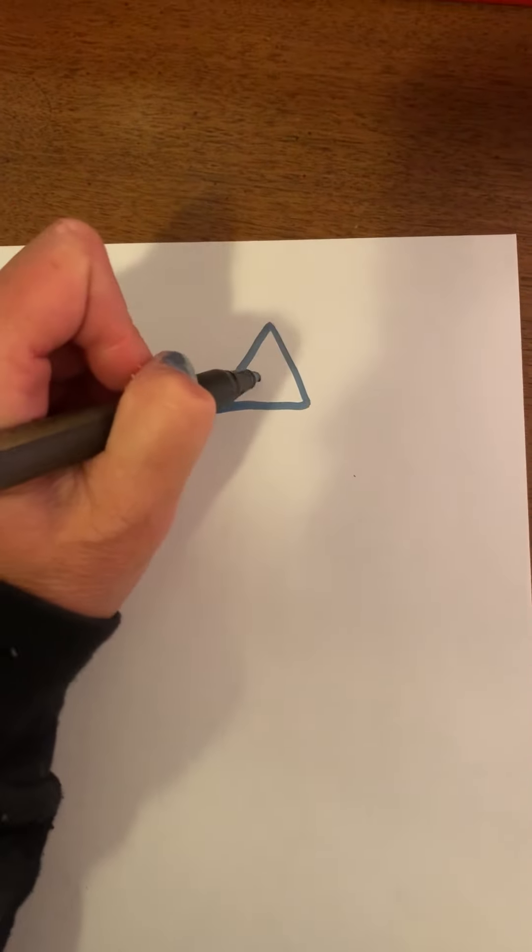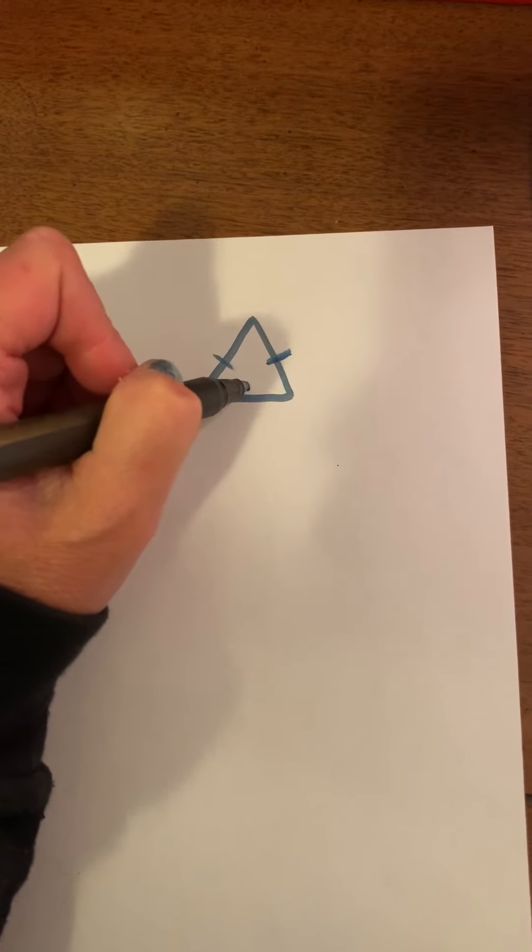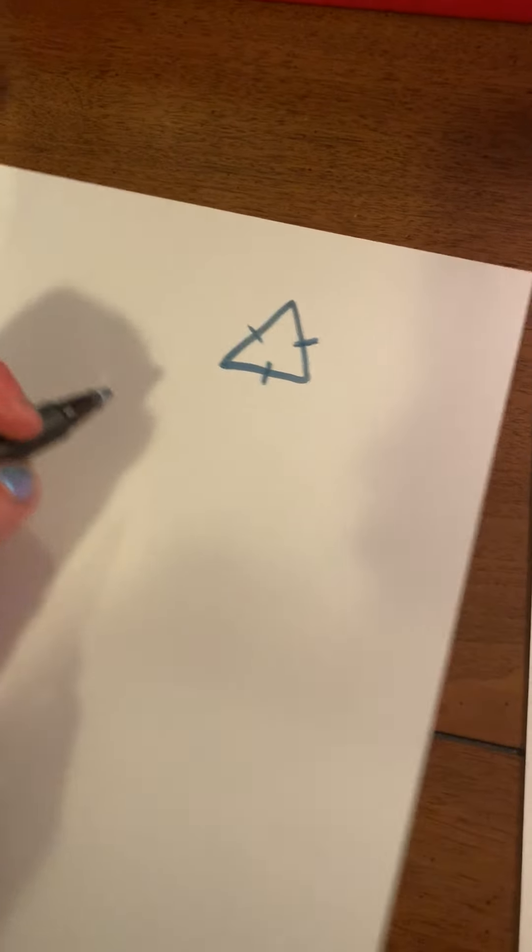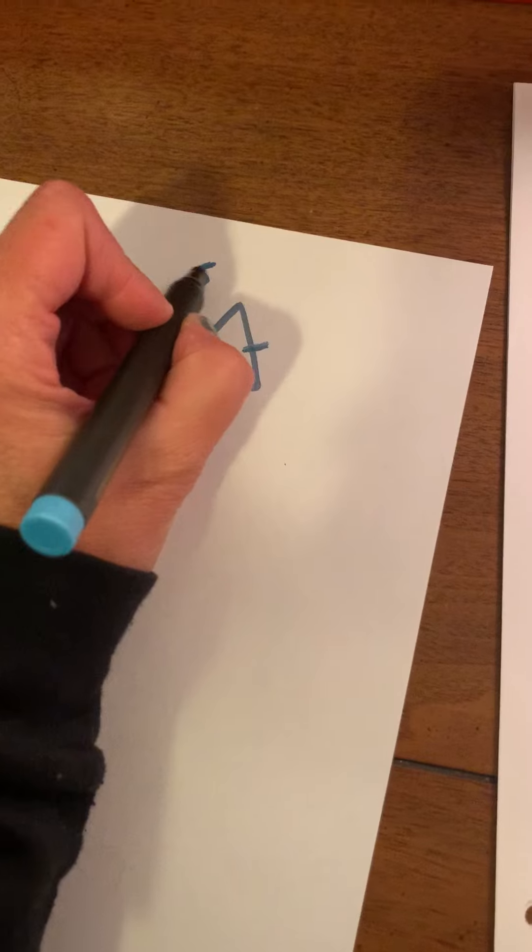So if I draw a triangle, this would be a side, this would be a side, and this would be a side. But those are sides.